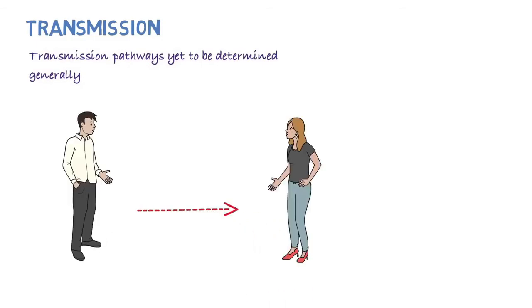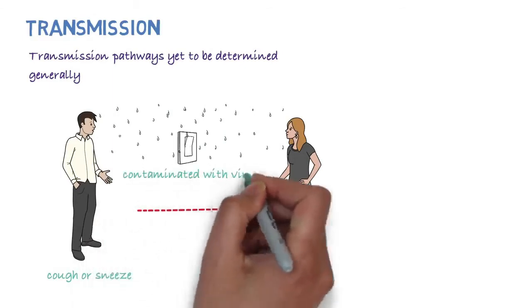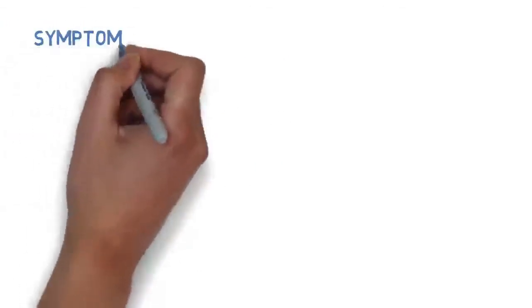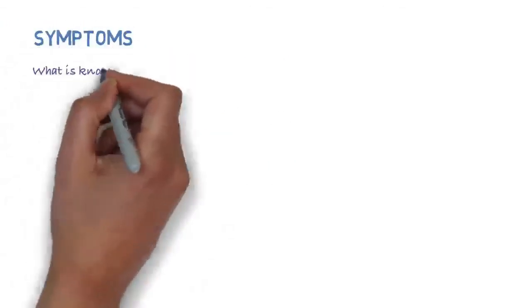How is it transmitted? The exact dynamics of how the virus is transmitted is yet to be determined. In general, respiratory viruses are usually transmitted through droplets created when an infected person coughs or sneezes, or through something that has been contaminated with the virus.